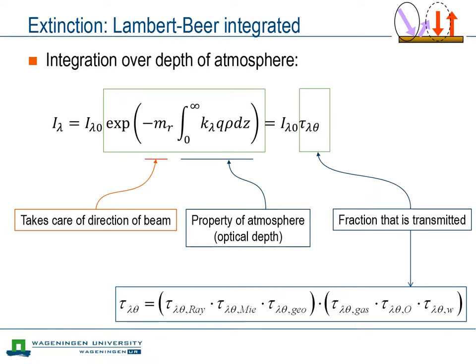For our derivation, we assumed that there was only one optically active compound. However, in reality there are many more, and the effects can both be related to scattering and absorption. The effect of each of those compounds can be expressed as a transmissivity, and the total transmissivity of the atmosphere is simply the product of all the individual transmissivities, where we assume that the various processes are mutually independent.